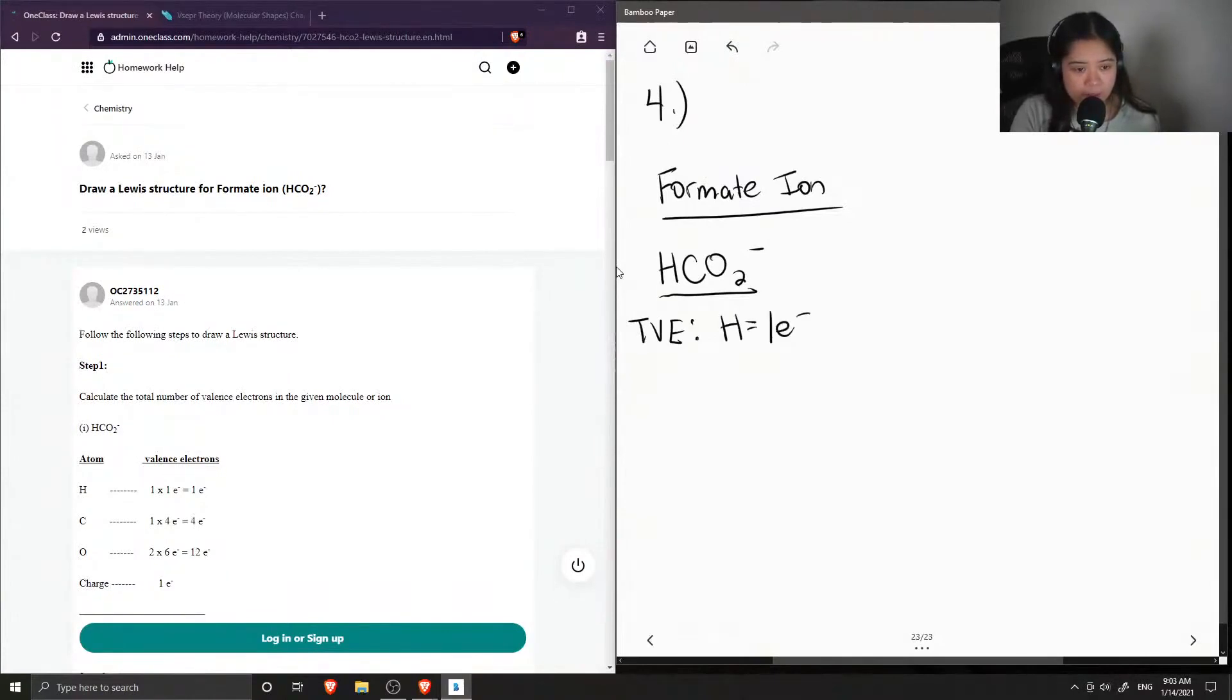Hydrogen has one valence electron, carbon has four, and oxygen has six. And there are two oxygen atoms, so we multiply this by two.